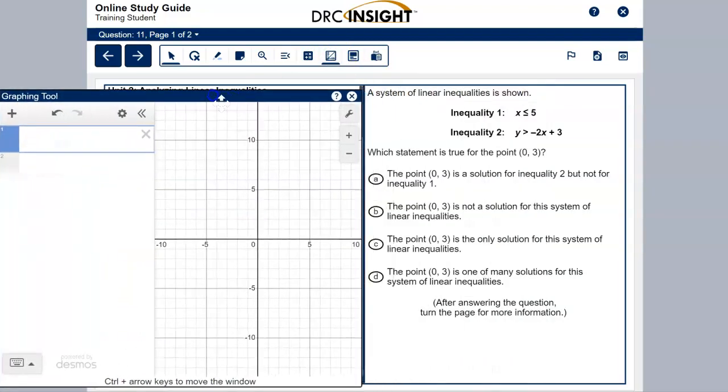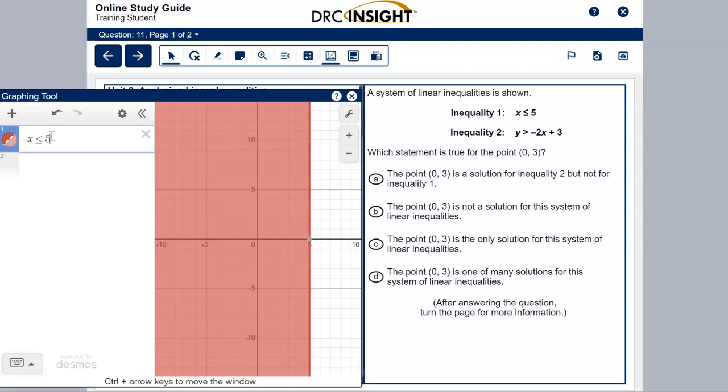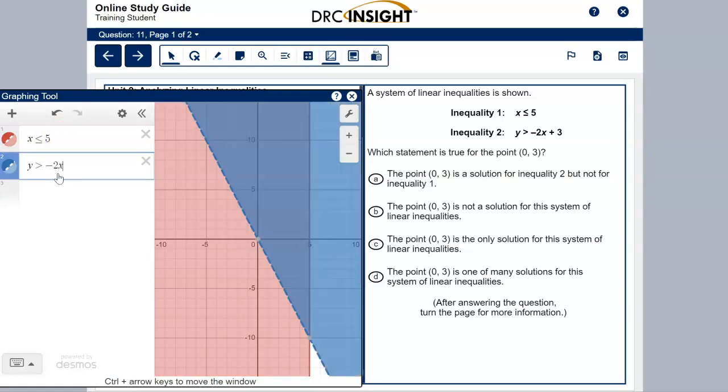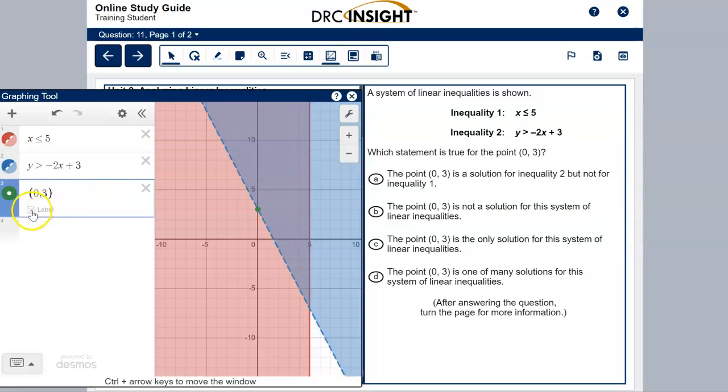And let's type in the first inequality. X is less than or equal to. Be sure you put both. And then put your 5. And then the second inequality goes on a separate row. Y is greater than negative 2X plus 3. All right. So I'm looking at the point 0-3. So type in the point 0-3. And let's label that. And it is on a dashed line. Okay. Here's the thing. A point on a dashed line is not part of the solution of that inequality. And that's because here, that's coming from the blue one. If you'll notice, it's a blue line that's dashed.